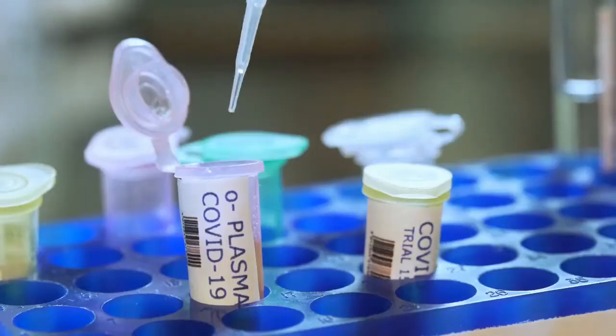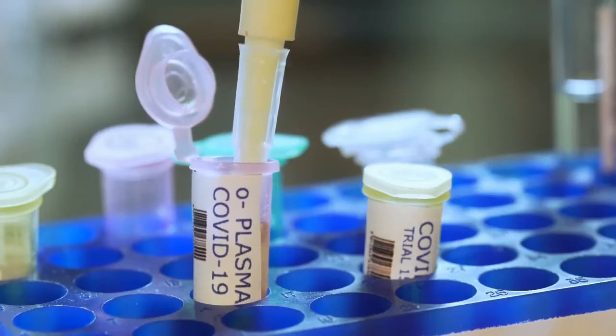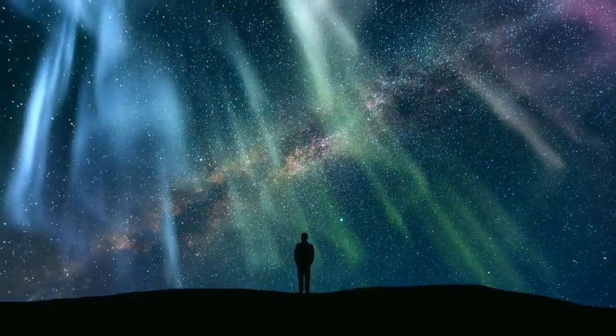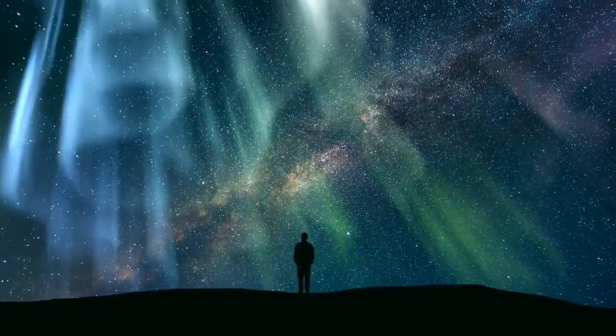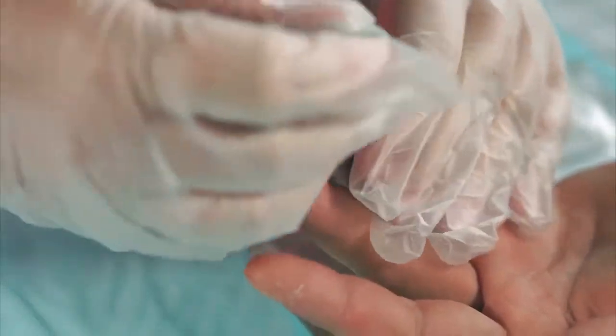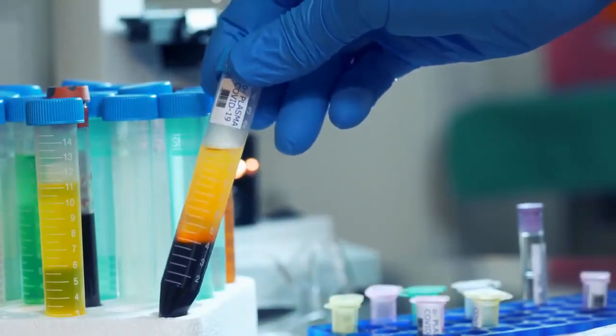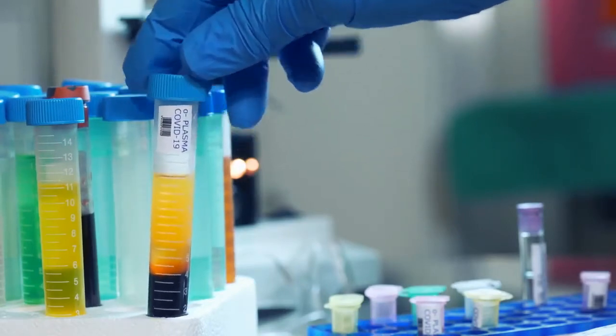AB positive - people with this rare blood type, 3.4%, can get blood or plasma of any kind. They are known as the universal recipients. AB negative - this is a rare blood type, only 0.6% of US people have it. A person with this type of blood is known as a universal plasma donor, because anyone can receive this type of plasma.